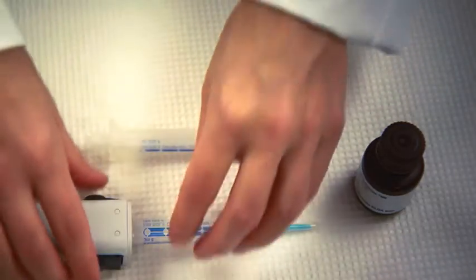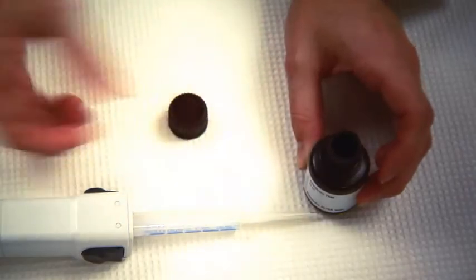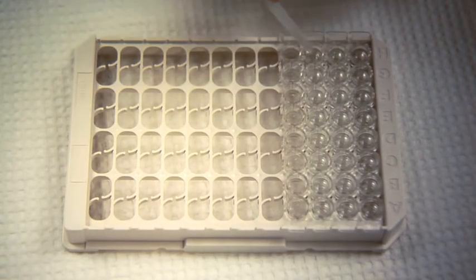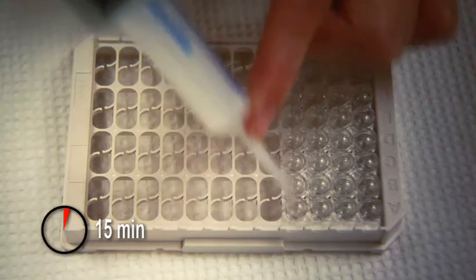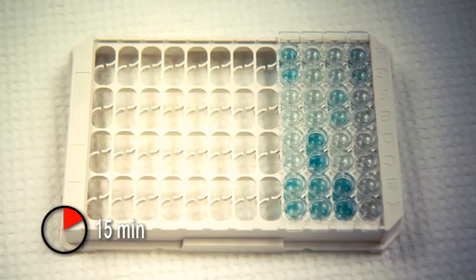Add substrate TMB to wells. Make sure to change pipette tips between conjugate solution and substrate TMB. Incubate at room temperature, in this assay for 15 minutes. Wells undergoing a reaction will turn blue.